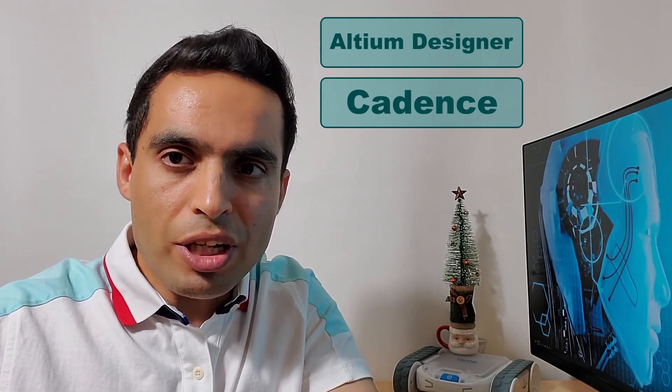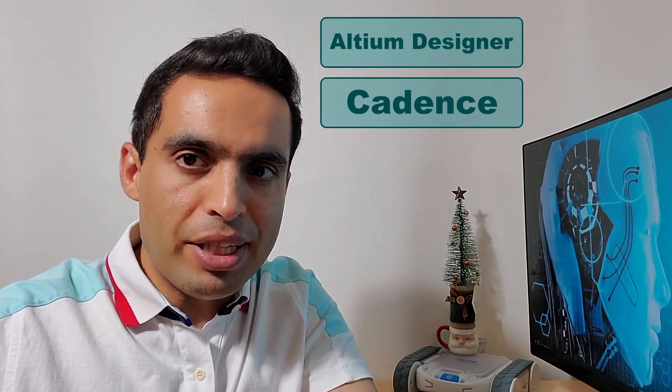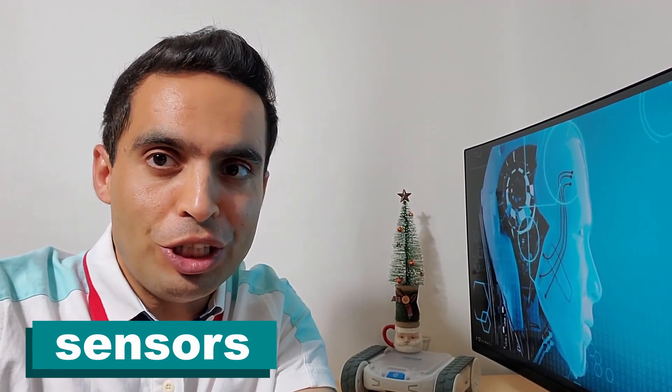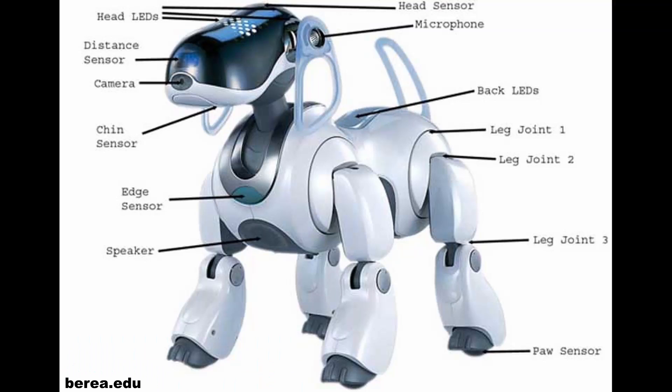The most common PCB design tools used in the robotics industry are Altium Designer and Cadence. As a robotics electrical engineer, you need to be familiar with different types of sensors, know how to select the right sensor, design sensor circuits, and write firmware for the sensor.